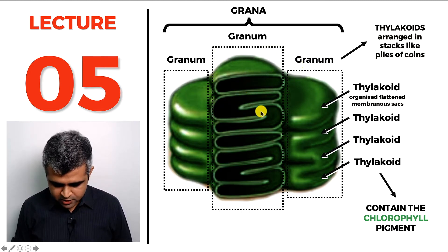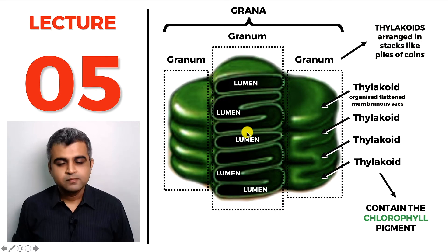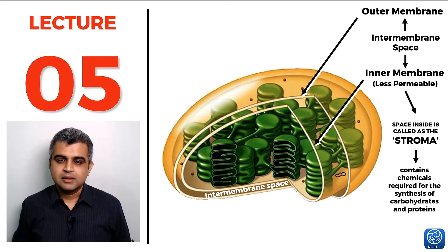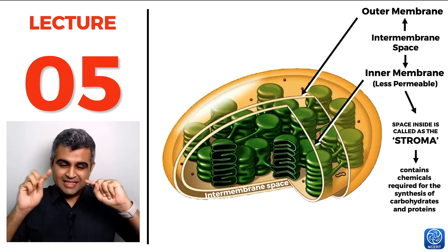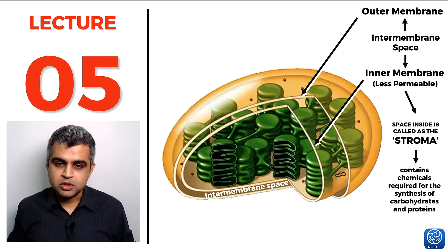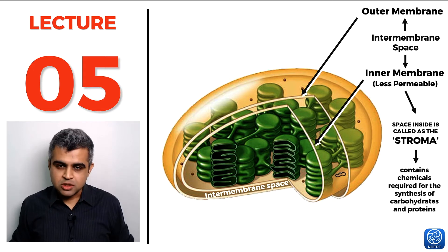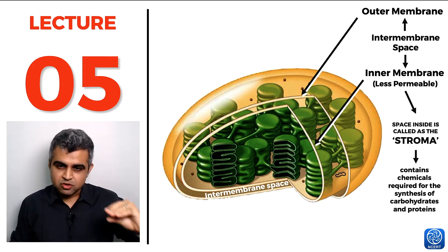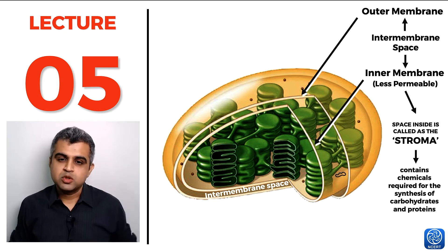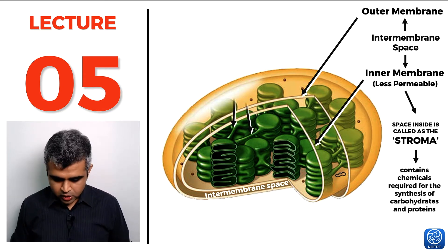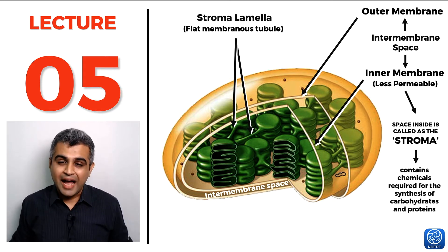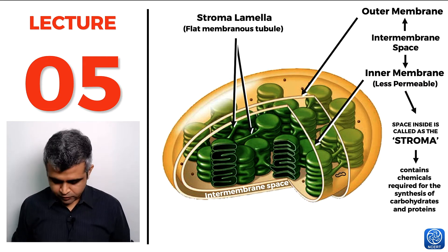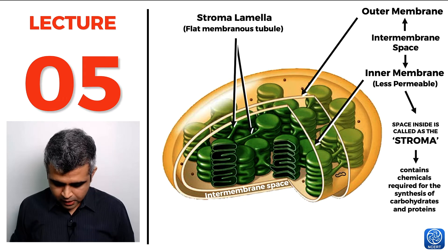Inside each thylakoid there is a space called the lumen. To summarize the chloroplast: there is an outer membrane enclosing an inner membrane with inter-membrane space in between. Inside the inner membrane is the matrix or stroma, which contains grana — stacks of coin-like thylakoids each having a lumen. The stroma lamellae, flat membranous tubules, connect the various thylakoids and grana to each other.